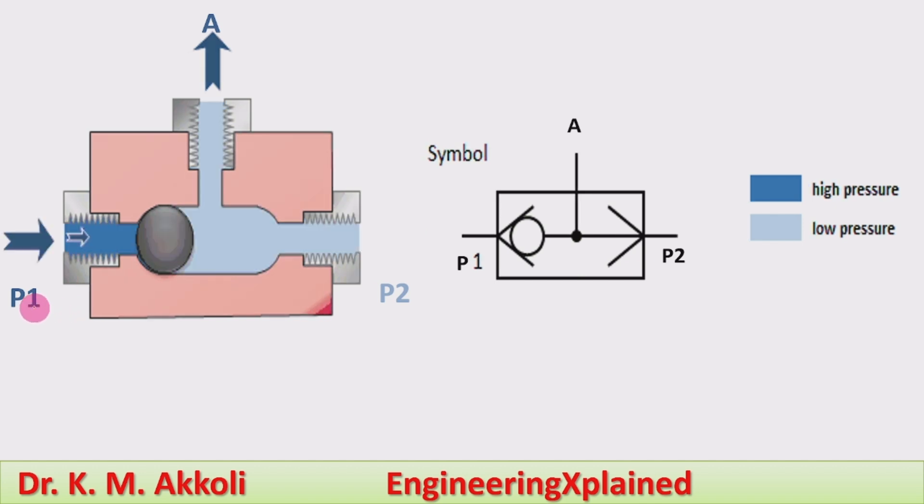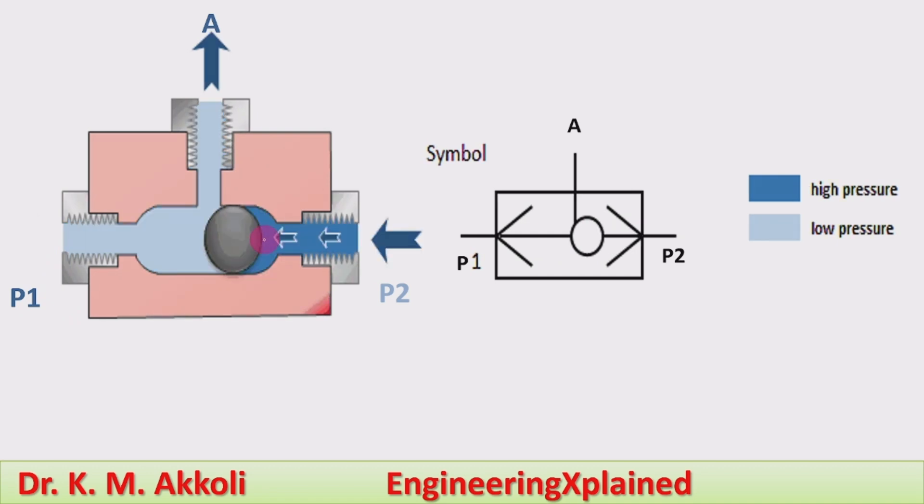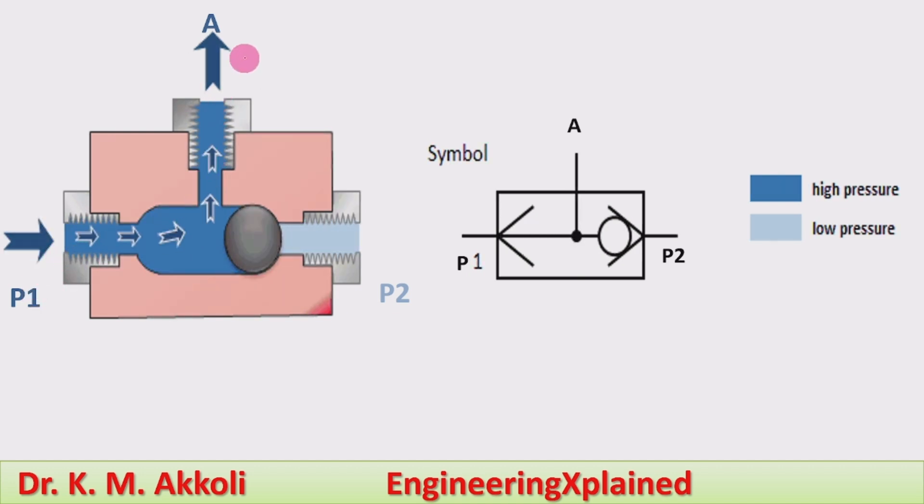Here, if the pressure P1 is higher, the shuttle moves towards the right and the flow from P1 will connect to the actuator.